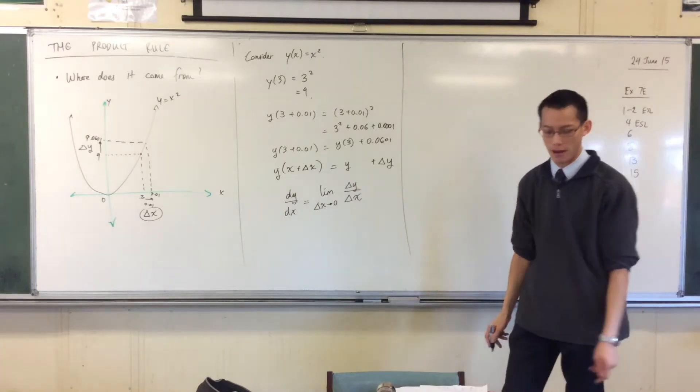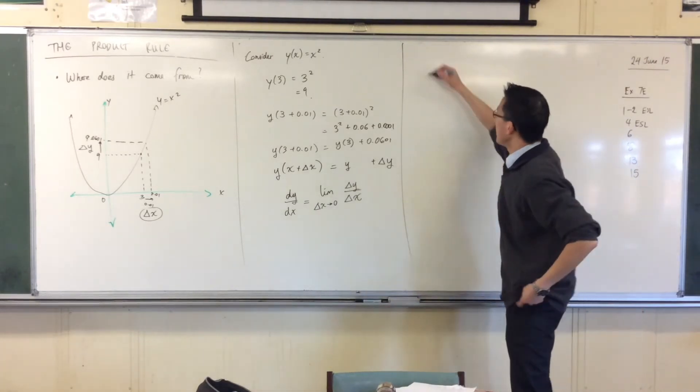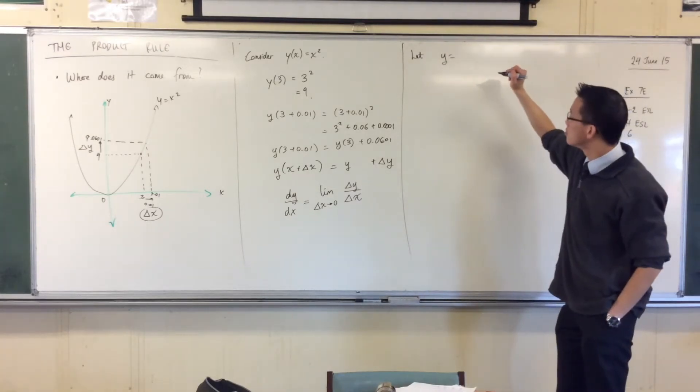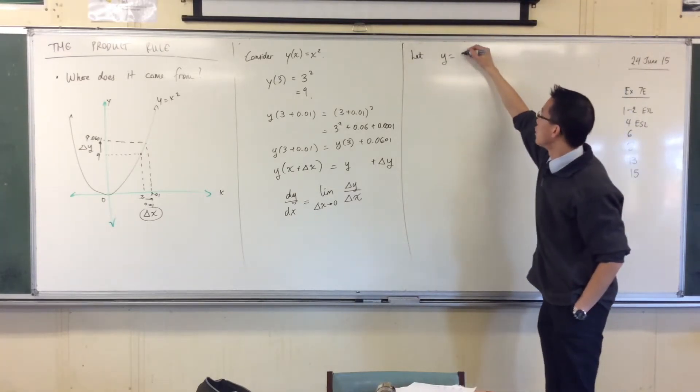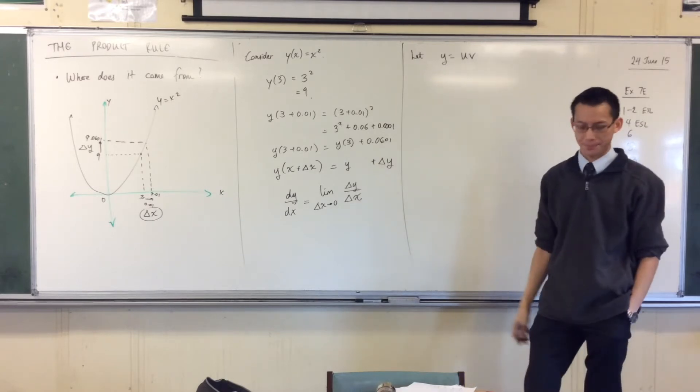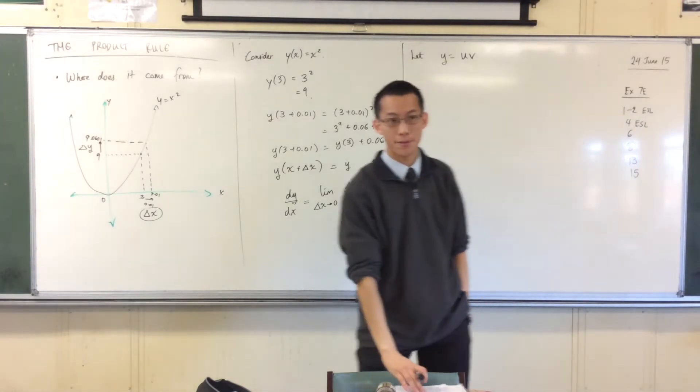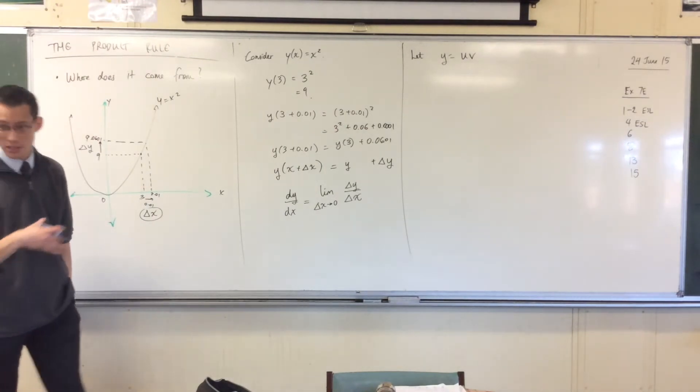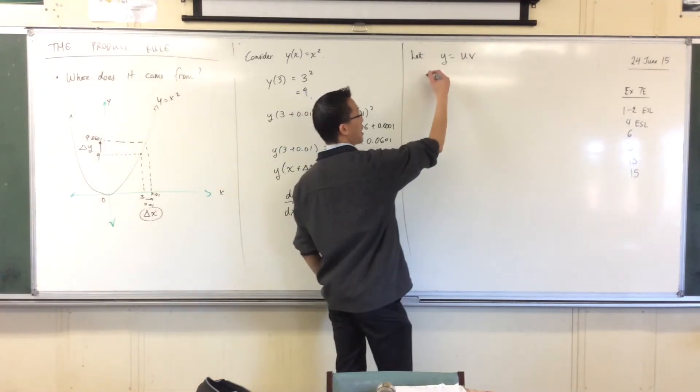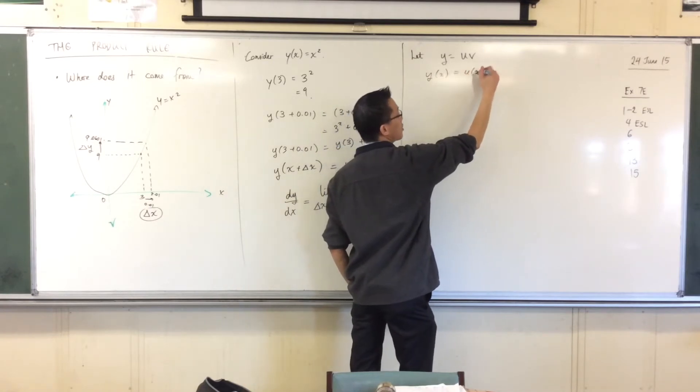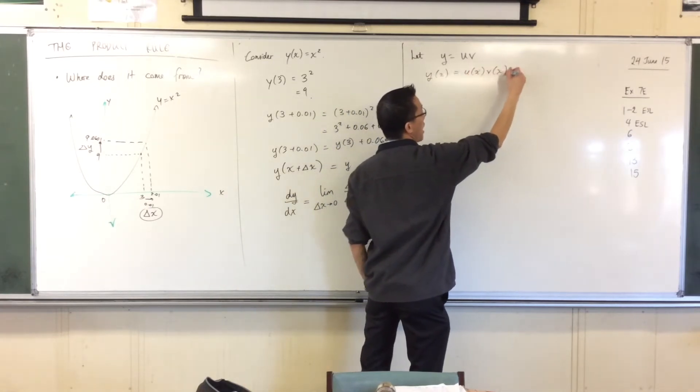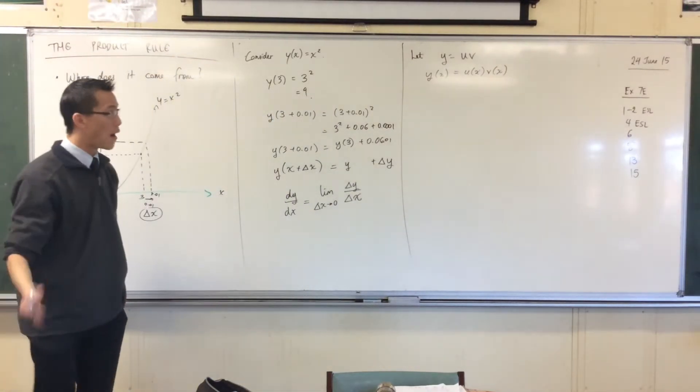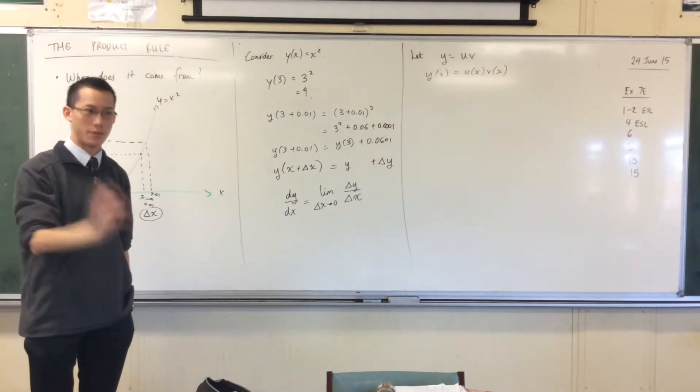Now we are ready to pull a product out. So if I say let y equal uv, it's the product of two functions. So just to clarify, this is just kind of a side note, that all these things are functions of x. So y equals uv is just my shorthand way of saying y of x equals u of x times v of x.